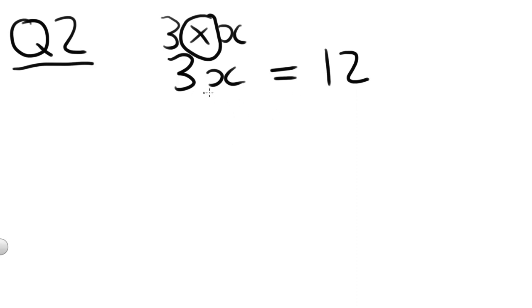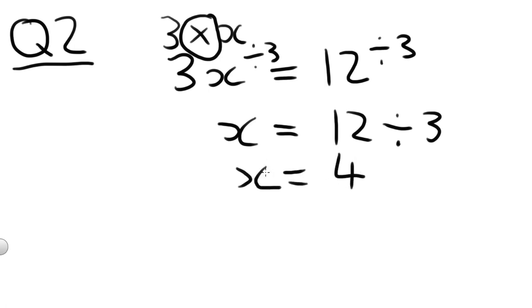Because we're multiplying X by 3, the opposite of multiplication is divide. So we need to divide that side by 3 to get rid of the 3. And therefore, we have to divide the right-hand side by 3 too. So we'll end up getting X will equal 12 divided by 3. X equals 4. Remembering we can check the answer by putting that back in here. 3 times 4 equals 12. Tick.